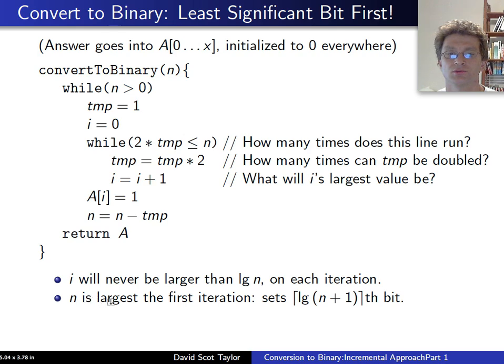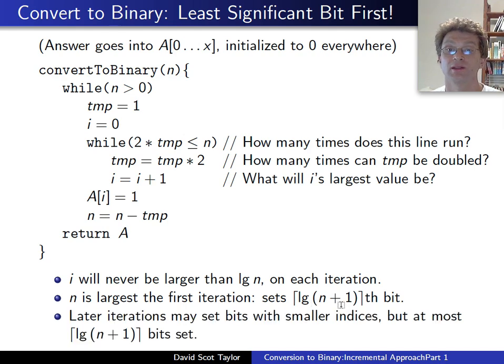So we can make that a little bit more precise. In the first iteration, we end up setting the ceiling of log of n plus first bit. So for 102, we set the 7th bit, numbering bits from 1 in this case. We end up hitting this conditional this number of times to set that bit. And later iterations, as n shrinks throughout the course of our outer loop of the algorithm, later iterations can set more bits with smaller indices. But, at most, log of n plus 1 bits will be set.